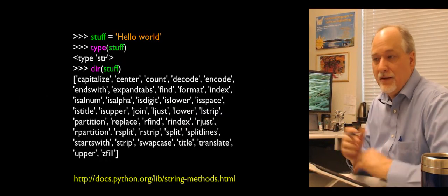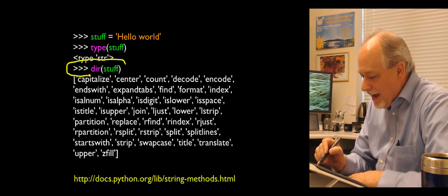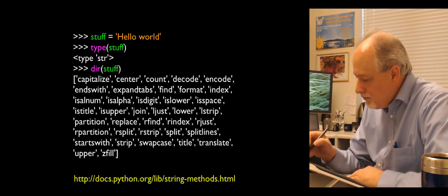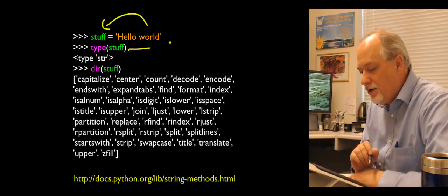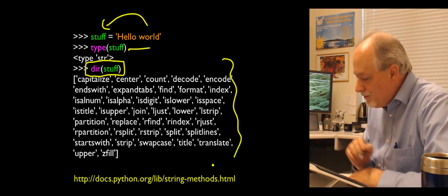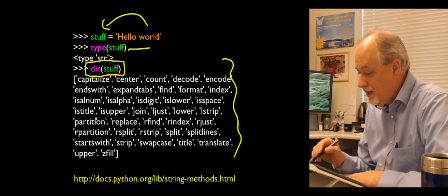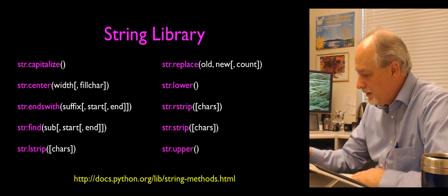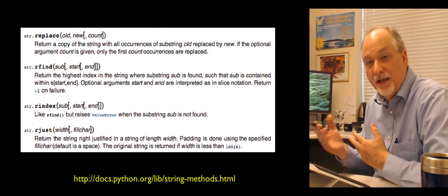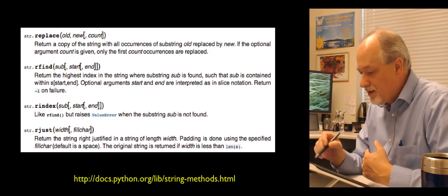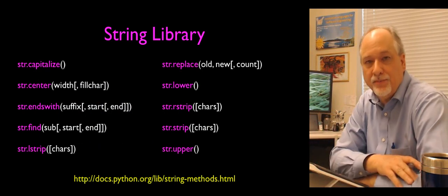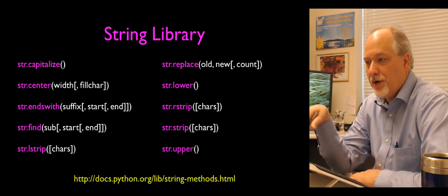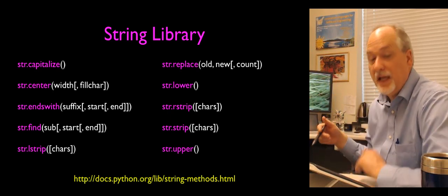There is a command inside Python called dir to ask: what are all the things built into this that I can make use of? So dir on a string gives a raw dump of all the built-in capabilities. You can also look at the online documentation at the Python website to see these things with their calling sequences and parameters. Here are just a few: capitalize, center, endswith, find, and stripping.